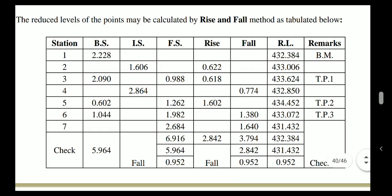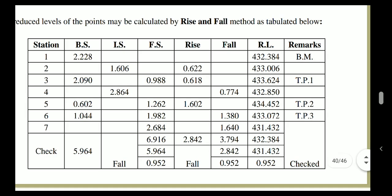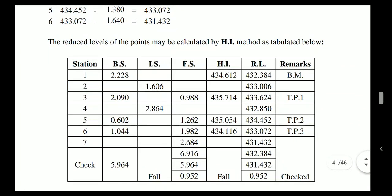Now we apply the arithmetic check for the Rise and Fall method. Sum of back sights = 5.96; sum of fore sights = 6.916. Their difference is 0.952 (negative). Sum of rises minus sum of falls also equals 0.952. Last RL minus first RL also equals negative 0.952. All three values are equal, so our check is verified correct.